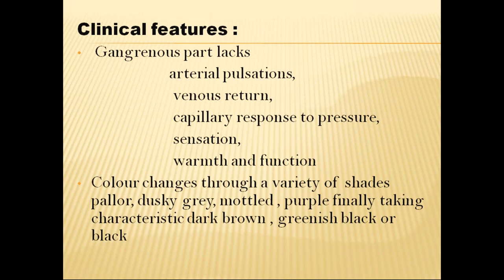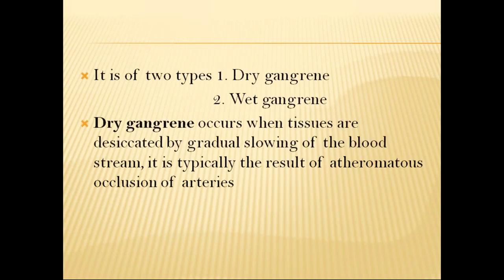How does a gangrene patient present? There will be macroscopic death of tissue which is black in color. The gangrenous part lacks arterial pulsations, venous return, capillary response to pressure, sensation, warmth, and function. Color changes through a variety of shades — from pallor to dusky gray, mottled purple, finally taking characteristic dark brown, greenish black, or black color.